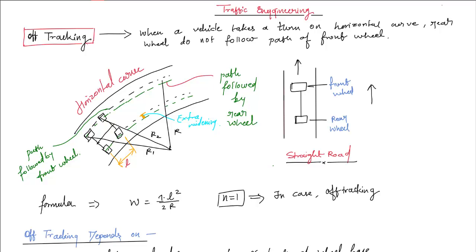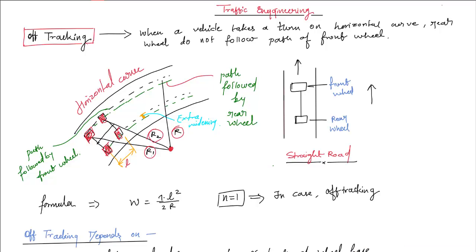In this horizontal curve, you can see this is the center of the curve and this is the radius of the curve. R1 is the radius of the rear wheel — you can see the rear wheels and front wheel of the vehicle. R1 is always less than R2, and R2 is always greater than R1. The distance L between the two wheels is the length of the wheelbase, or the distance between the rear wheel and front wheel.